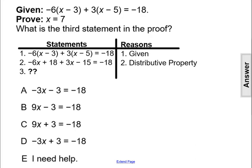Given the information that negative 6 times the quantity of x minus 3 plus 3 times the quantity of x minus 5 equals negative 18, and that we're trying to prove that x equals 7, what is the third statement in the proof?